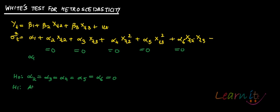And the alternative hypothesis is that, at least one of them is not equal to 0. In case if at least one of them is not equal to 0, then this Sigma squared T is equal to Alpha1 plus something will not remain as a constant number.